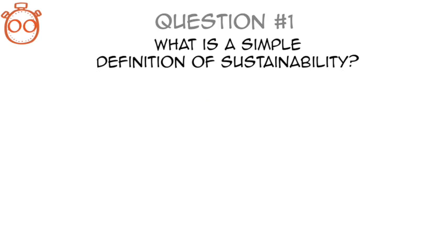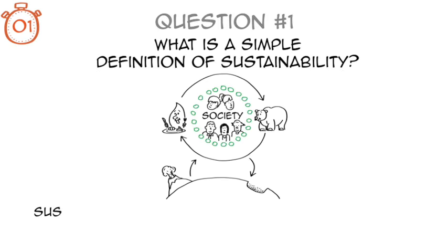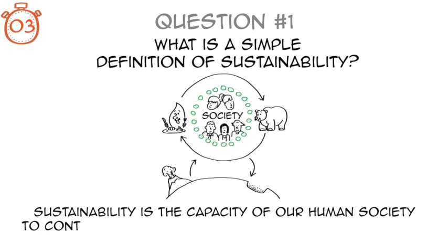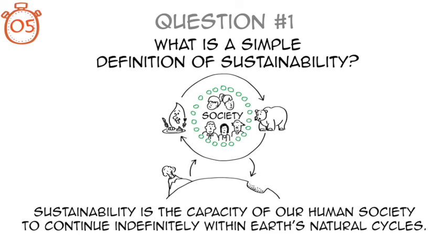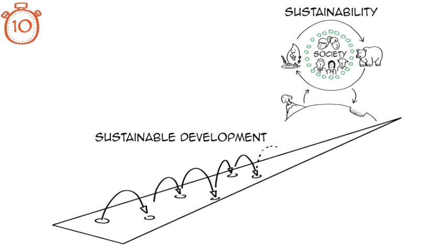Let's answer the first question. Sustainability is the capacity of our human society to continue indefinitely within Earth's natural cycles. A sustainable development is a development that leads towards sustainability. It makes sense so far, right?